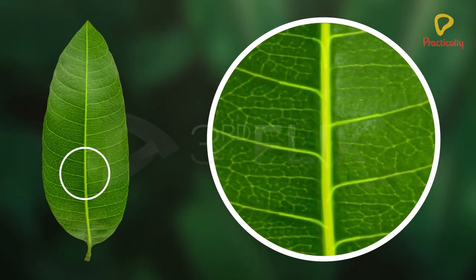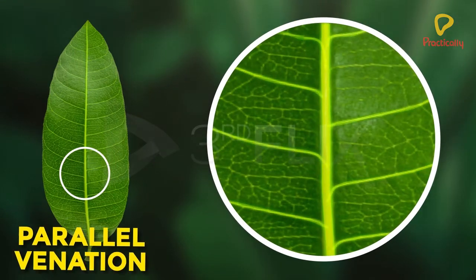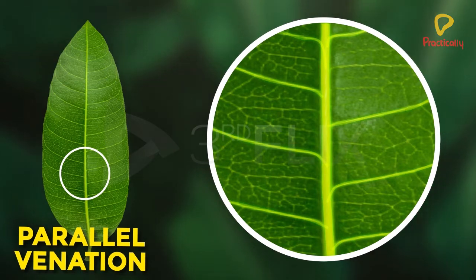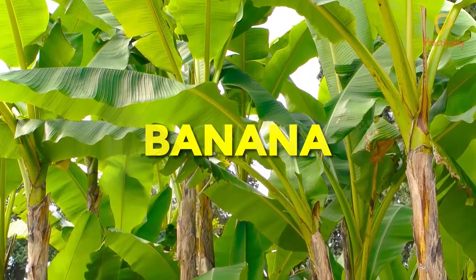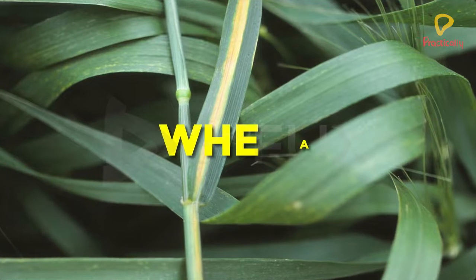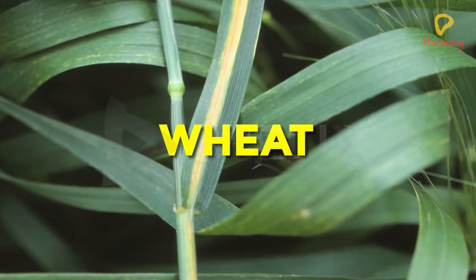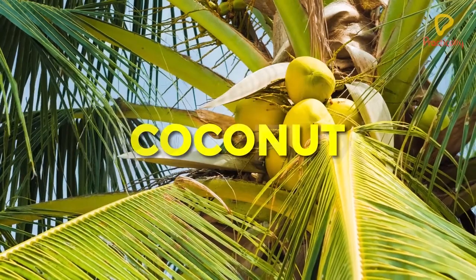When the veins run parallel to one another, it is called parallel venation. This type of venation is seen in monocots, for example banana, wheat, and coconut.